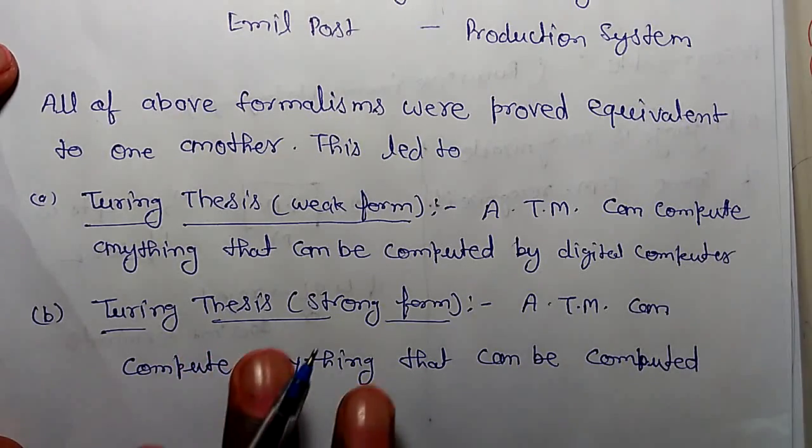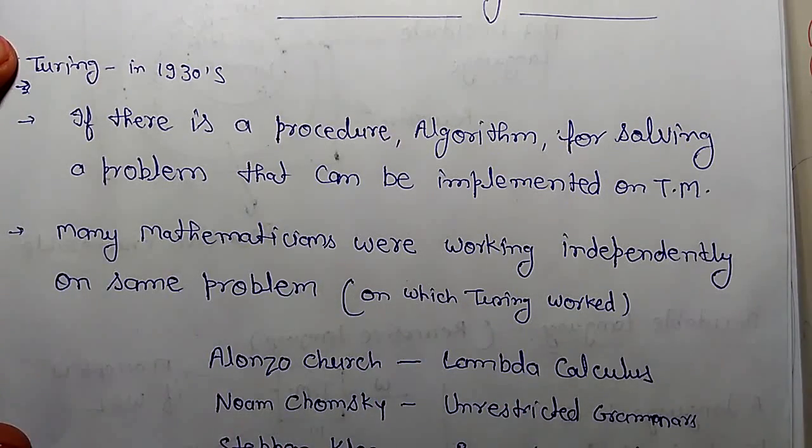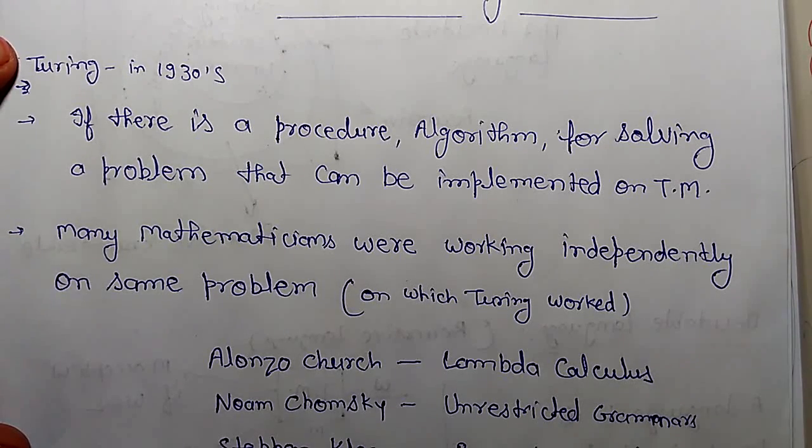The conclusion of Church-Turing thesis is if there is a procedure or algorithm for solving a problem, that can be implemented on a Turing machine.